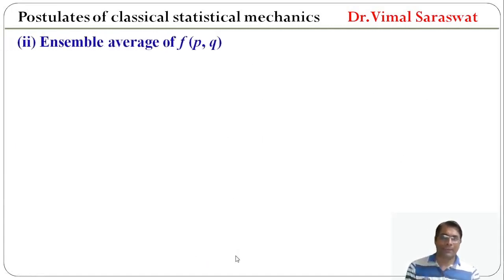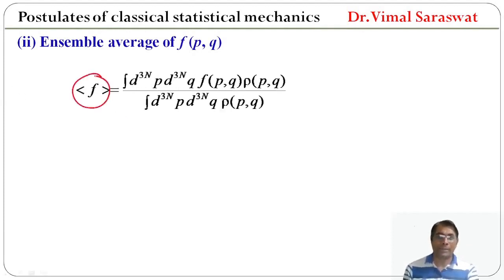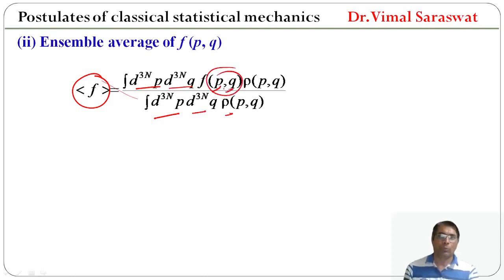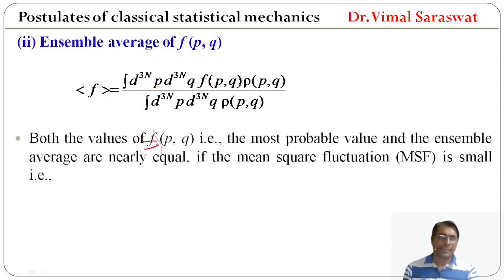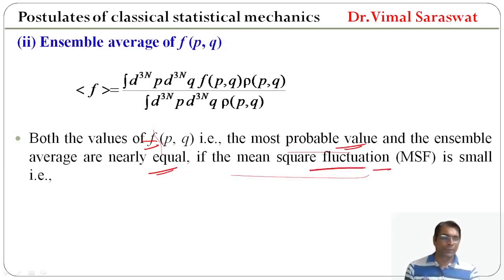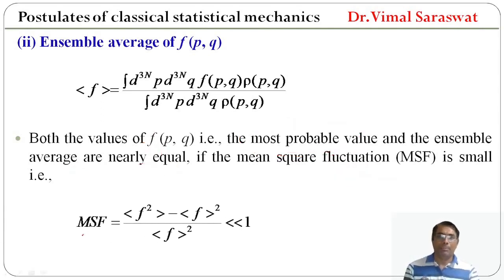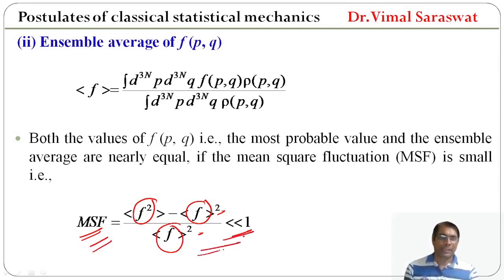The second method is the ensemble average of f, defined as: ⟨f⟩ = ∫ d³ᴺp d³ᴺq f·ρ / ∫ d³ᴺp d³ᴺq ρ, where both ρ and f are functions of p and q. The most probable value and the ensemble average are nearly equal when the mean square fluctuation is small. Mean square fluctuation is defined as: (⟨f²⟩ − ⟨f⟩²) / ⟨f⟩². If this is much less than 1, both methods give the same result.